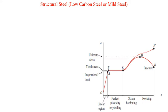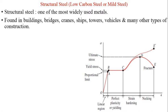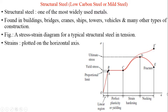Let us see the stress-strain behavior of structural steel, known as low carbon steel or mild steel. Structural steel is one of the most widely used metals in engineering — found in buildings, bridges, cranes, ships, towers, vehicles, and many other types of construction. From the figure we can see a typical stress-strain diagram for structural steel in tension, where strains are plotted on the horizontal axis and stresses (sigma) on the vertical axis.